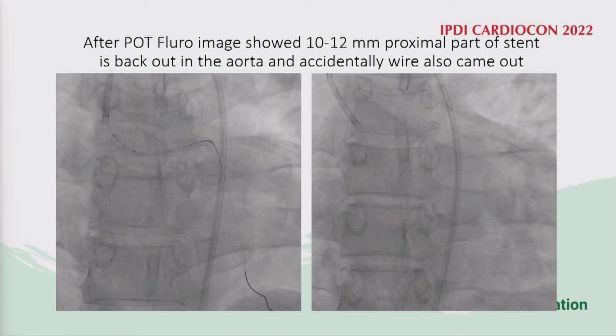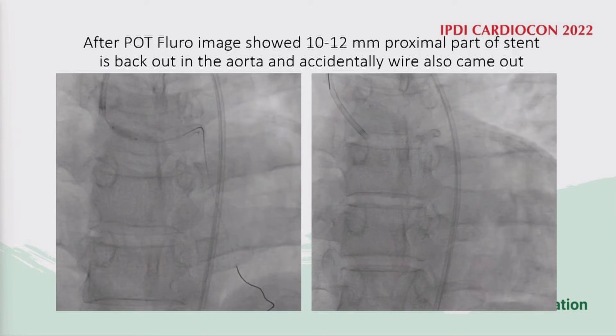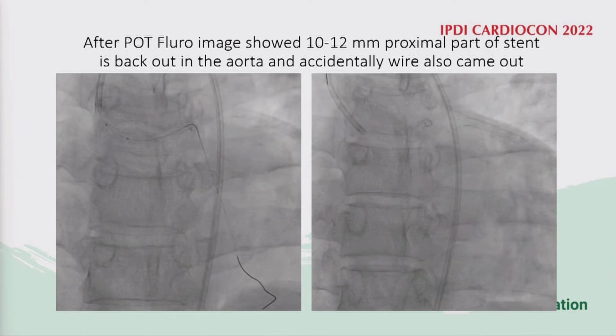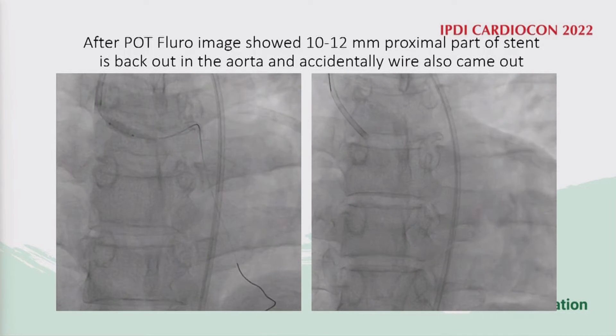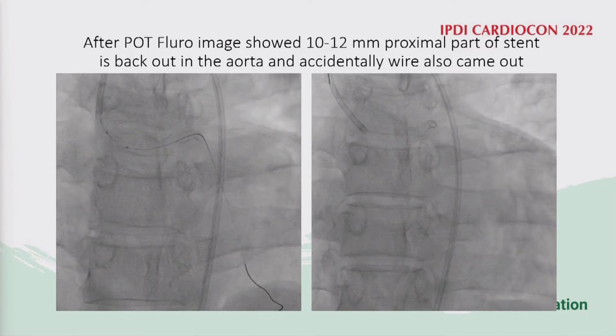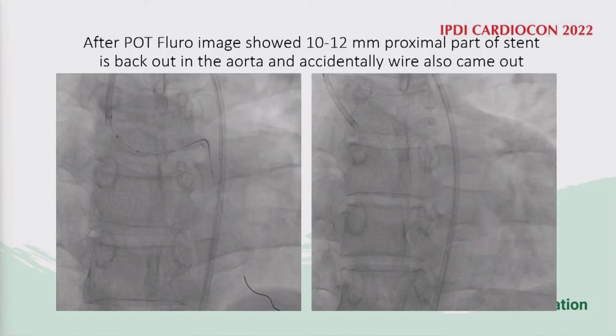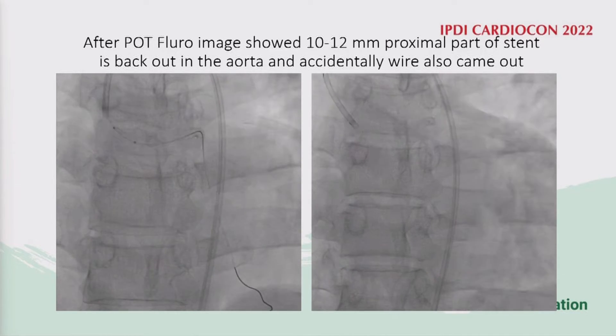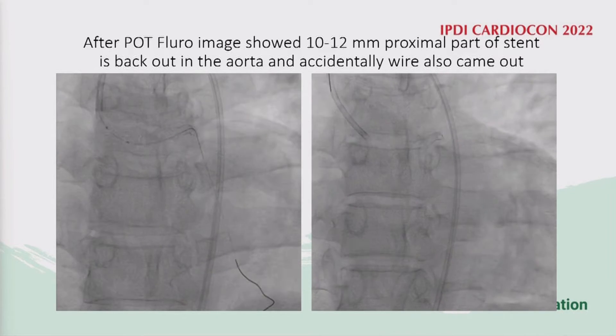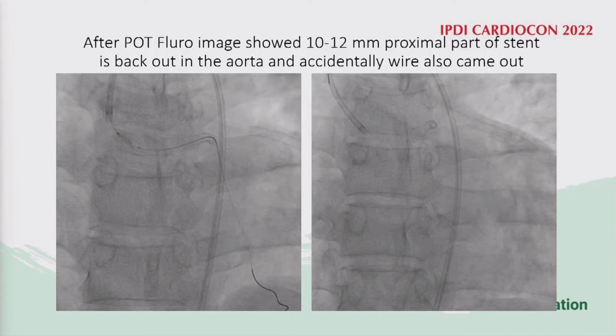Imaging showed that 10 to 13 mm of the stent had prolapsed back out into the aorta, and accidentally the wire also came out. Now the complication scenario had started.